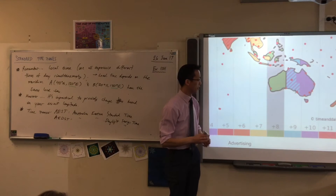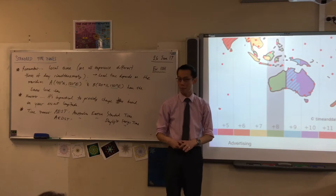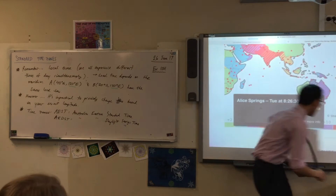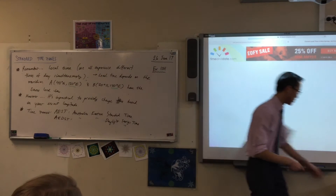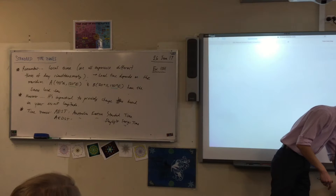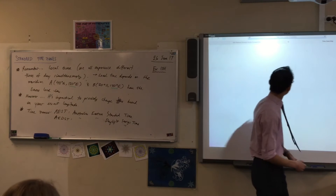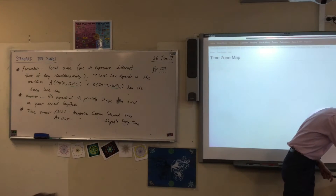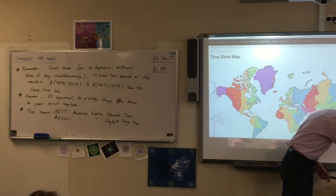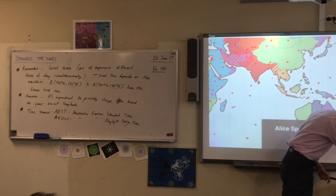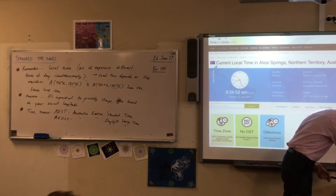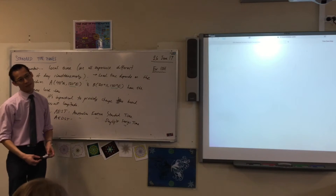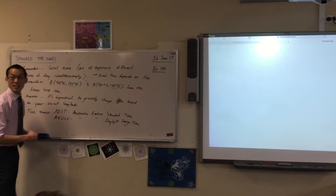Oh, by the way, you can Google this if you want — just look for a time zone map. So if I come back, there's Alice Springs. I clicked on Alice Springs. It's A-C-S-T. If it's Alice Springs, what would you guess that refers to? Central — Australian Central Standard Time.